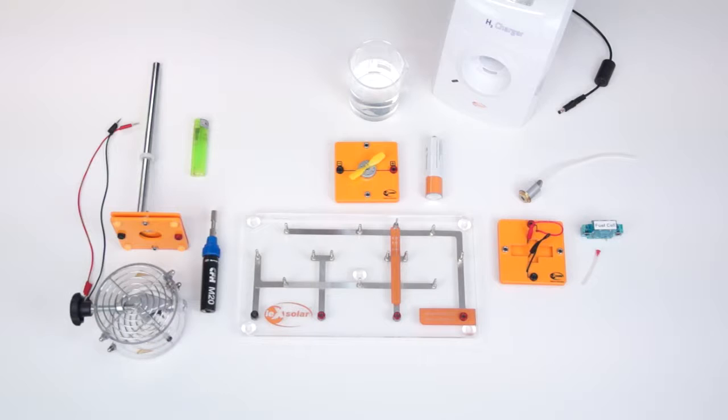For the experiment with the PEM fuel cell we need hydrogen. We produce this with the H2 charger. To this end we first fill distilled water into the water tank.